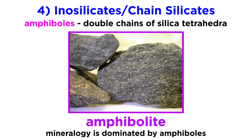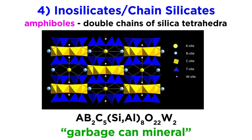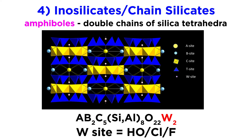There is an entire class of metamorphic rocks called amphibolite, because their mineralogy is dominated by amphiboles. Amphiboles have the general formula AB2C5SiAl8O22W2, and are sometimes called the 'garbage can mineral' because of their ability to take in so many different elements. The A, B, and C sites are distinguished based on the size of cation they can accommodate, and the W site contains hydroxyl, chlorine, and fluorine.